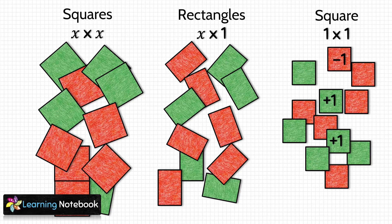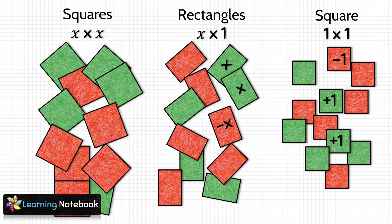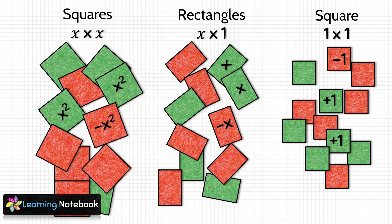For the small squares, the green side will represent 1 and the red side will represent minus 1. In the same way, for rectangles, the green side represents x and the red side represents minus x. And for the big squares, the green side will represent x squared and the red side will represent minus x squared.